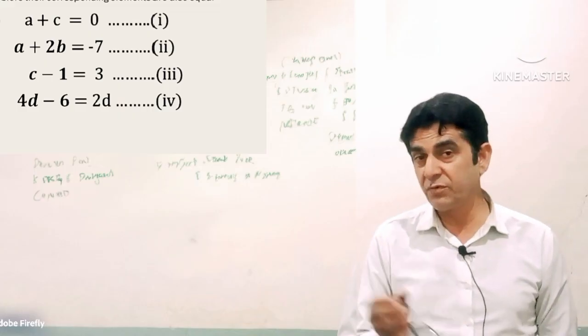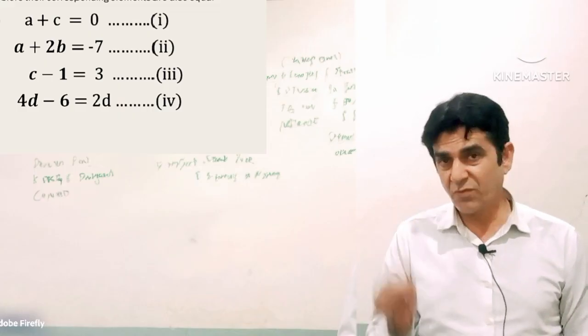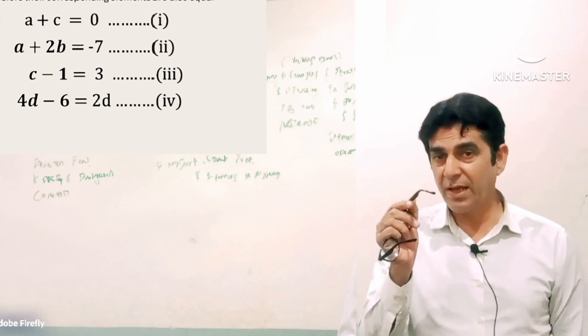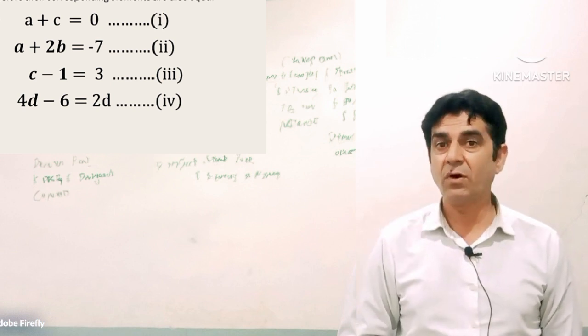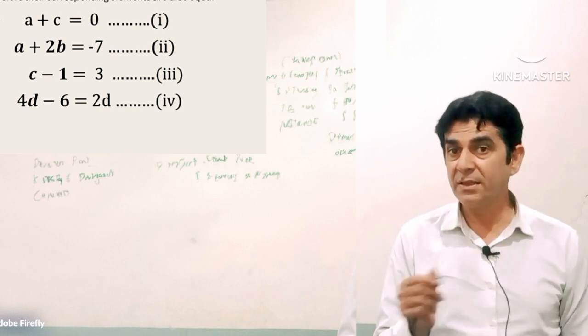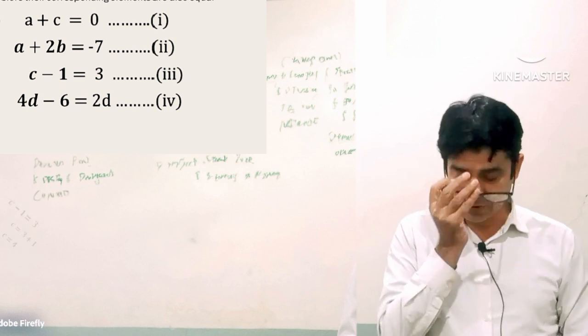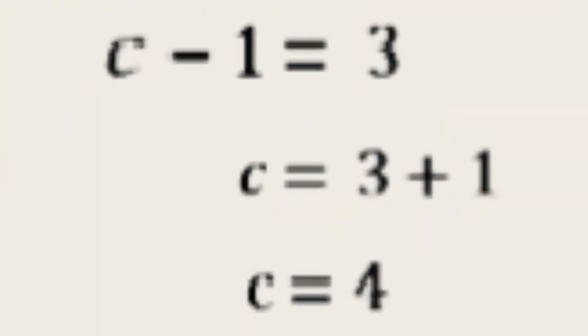Now what we do, we have to find a, b, c, and d. So first of all, we shall calculate the value of those variables which have only one variable in the equation. For example, equation number 3, we have c minus 1 equals 3.